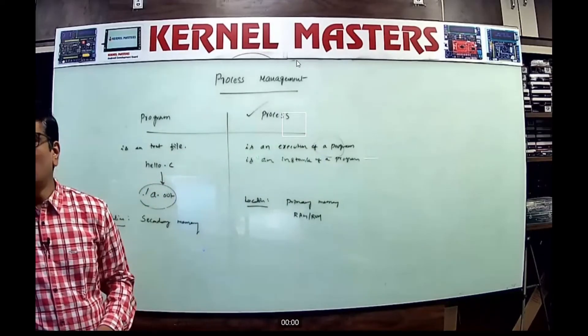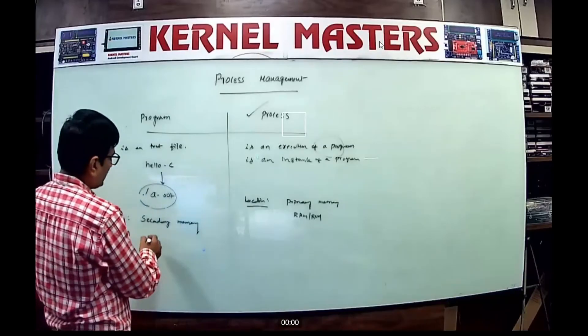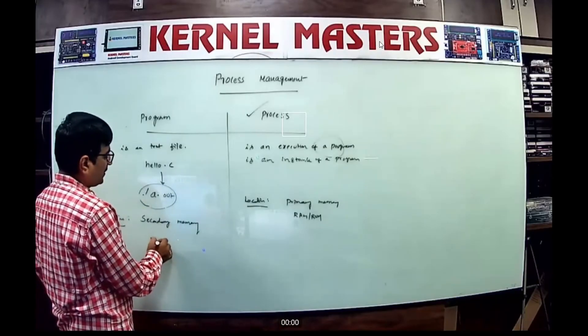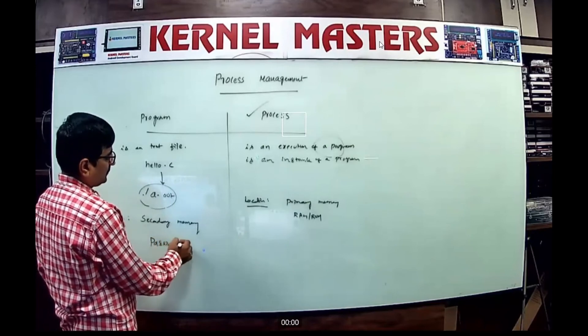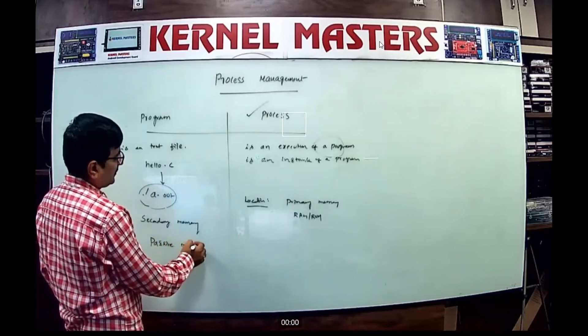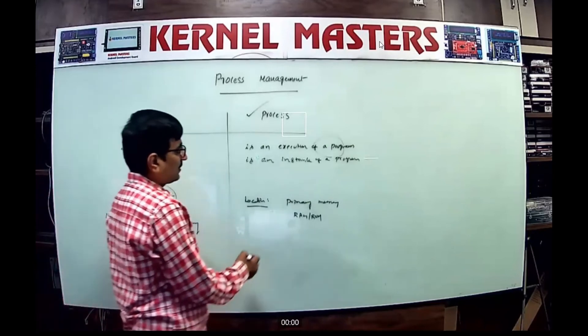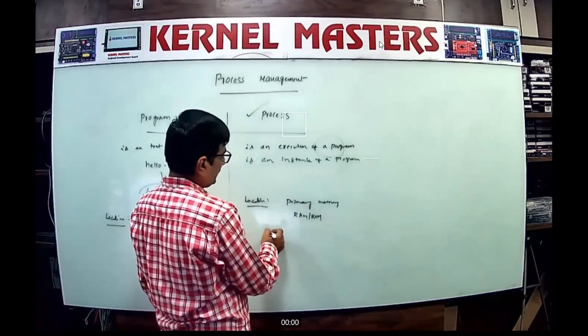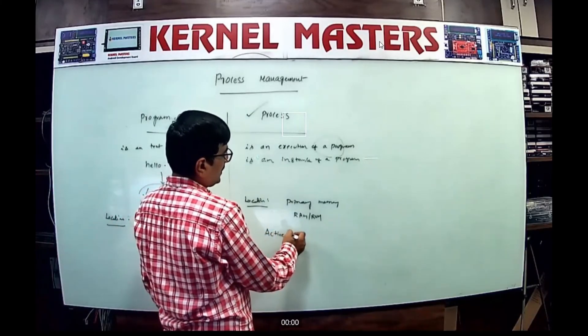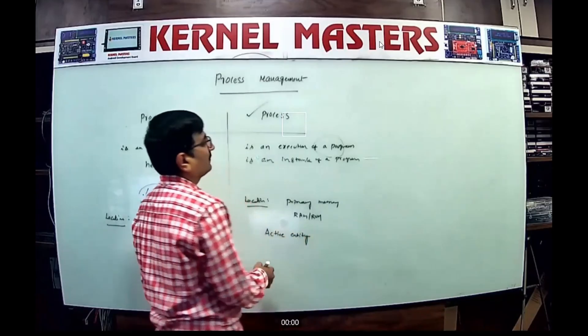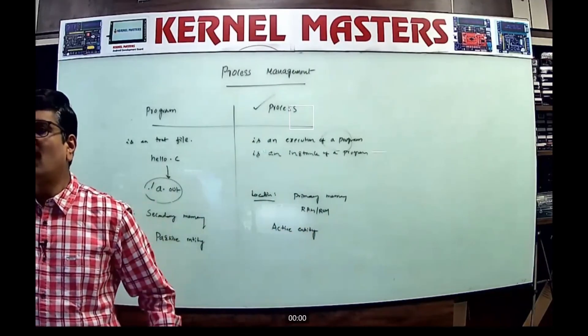A process is an active entity, always running with dynamic behavior changes. That is the difference between program and process.